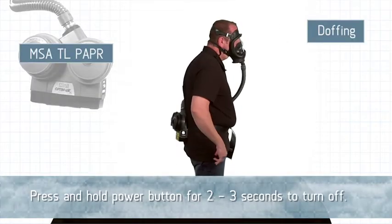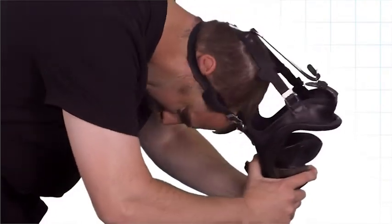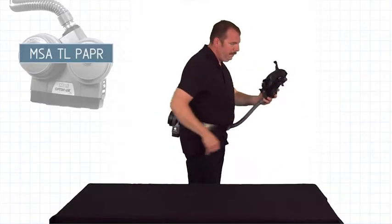Turn off your unit. Bend at the waist and remove your facepiece by tucking your chin in and pulling the facepiece down, out and away. Remove PAPR blower housing unit.